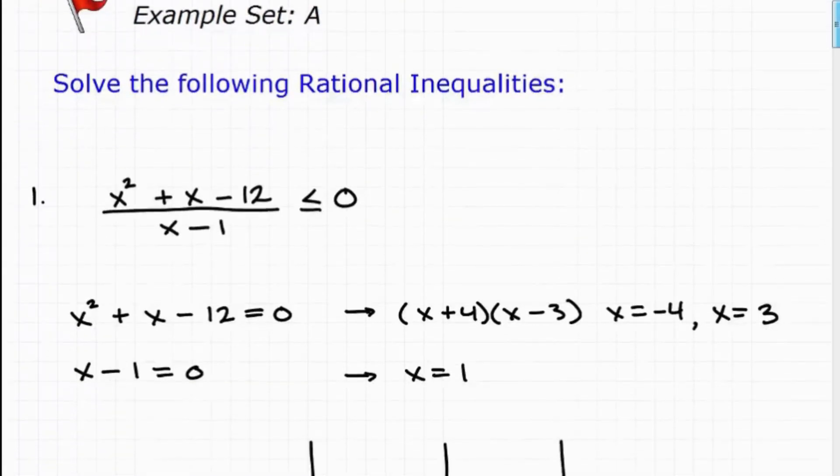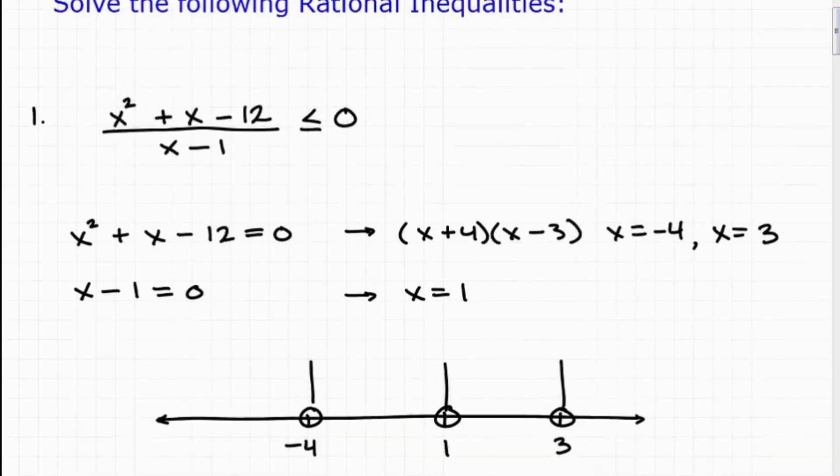All right, so the first thing, just a quick review, when we're solving these rational inequalities is we need to make sure that we have the inequality in correct form. Now, this one is in correct form because it's already less than or greater than or less than or equal to greater than or equal to 0. So the main idea is you need 0 on one side of the inequality, and then you need a simplified rational expression on the other.